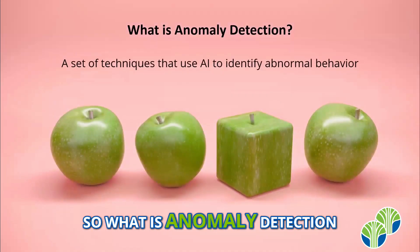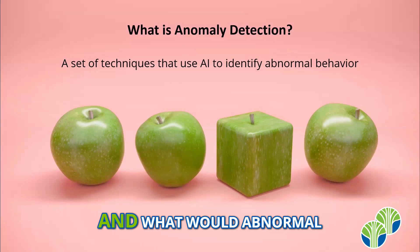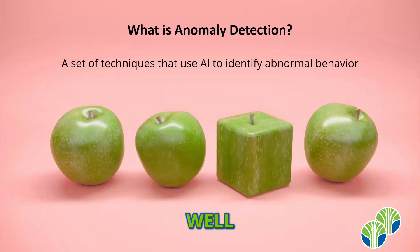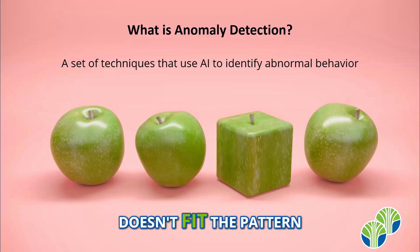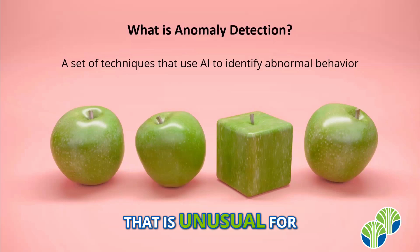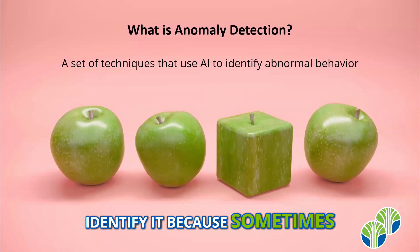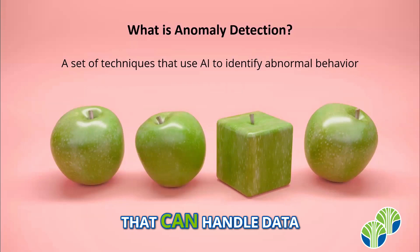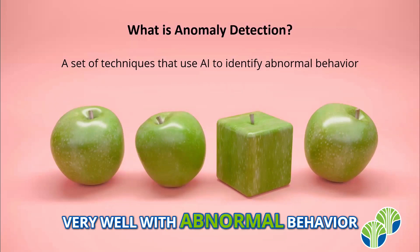So what is Anomaly Detection? It is a set of techniques that use AI to identify abnormal behavior. These days we're in a data-driven world, and we handle a lot of data, and we're interested in data that doesn't fit the pattern. It could be data that is unusual for various reasons, and we want to identify it because sometimes it indicates that something has gone wrong, and sometimes we have algorithms that can handle data that is normal but do not work very well with abnormal behavior.